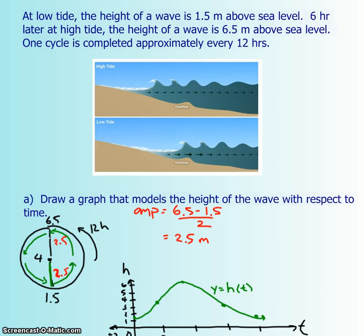Here's a tide question. At low tide, the height of a wave is 1.5 meters above sea level. Six hours later, at high tide, the height of a wave is 6.5 meters above sea level. One full cycle is going to take you about 12 hours. So they want you to first draw some sort of a graph that models the height of the wave versus the time. And in order to kind of figure that out, what I've done is I've modeled the ferris wheel question again.